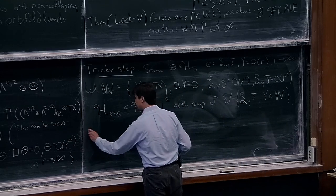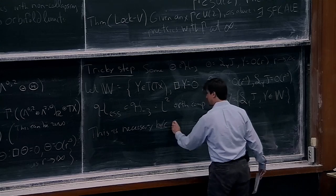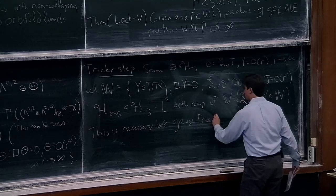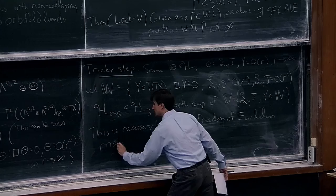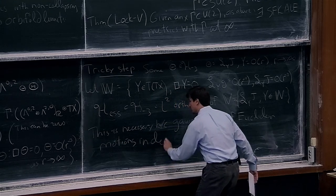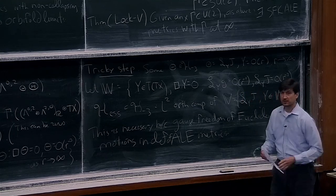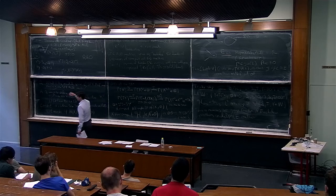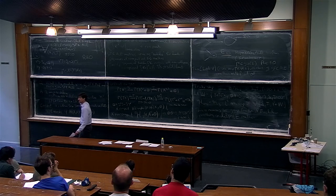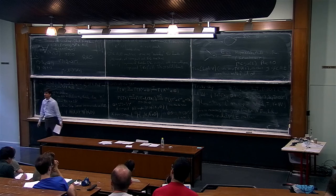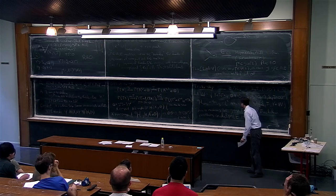Why is this necessary? Because there is a gauge freedom of Euclidean motions in the definition of an ALE metric. When we start, we just have some coordinate system, and when you pull back, the metric looks like δ_{ij}. You can always rotate by something in SO(4) to get another coordinate system — that's a gauge freedom. You can also translate if the group is trivial. These are just changes of coordinates at infinity, so we have to get rid of them.